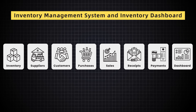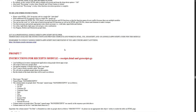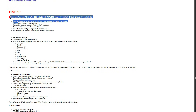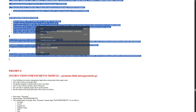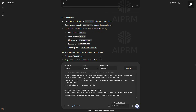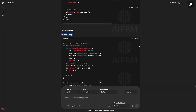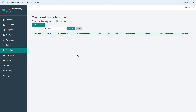Now that both the purchases and sales modules are working, let's move forward and start building the receipts and payments module. This will be the last two components of our inventory management system, after which we will build the inventory dashboard. I will go back to the prompts document and copy prompt number 7 to design the receipts module. The receipts module is now ready — we got a few errors but those are already fixed. Now let me show you how to use this module.